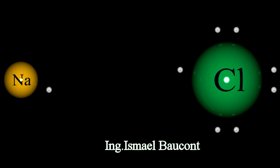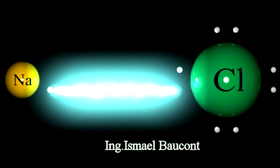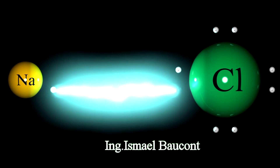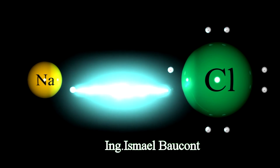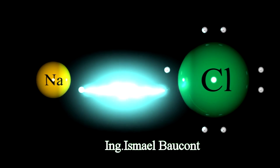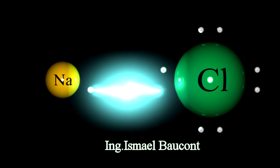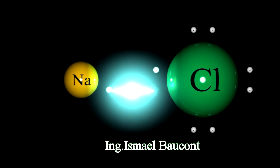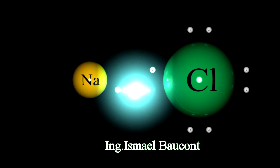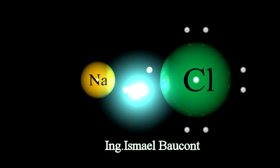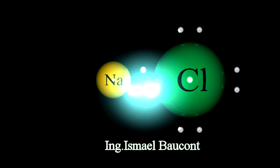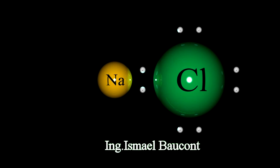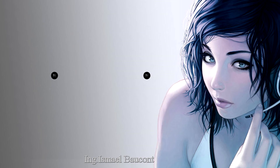A chemical bond is a lasting attraction between atoms that enables the formation of chemical compounds. The bond may result from the electrostatic force of attraction between atoms with opposite charges, or through the sharing of electrons as in the covalent bonds.